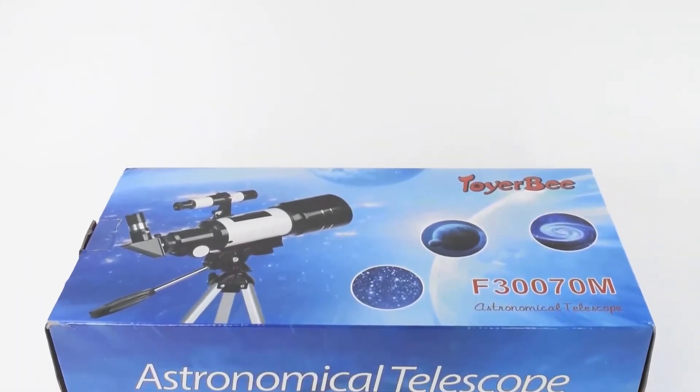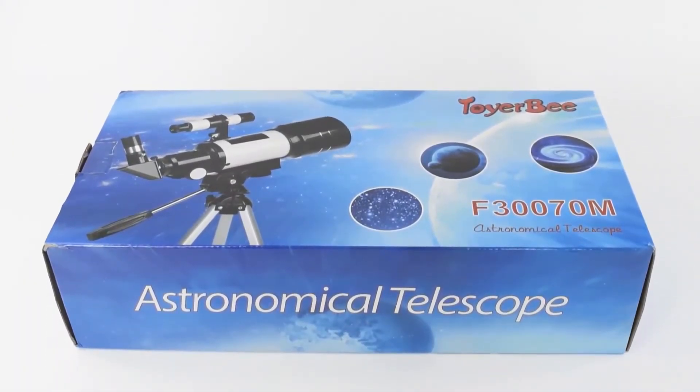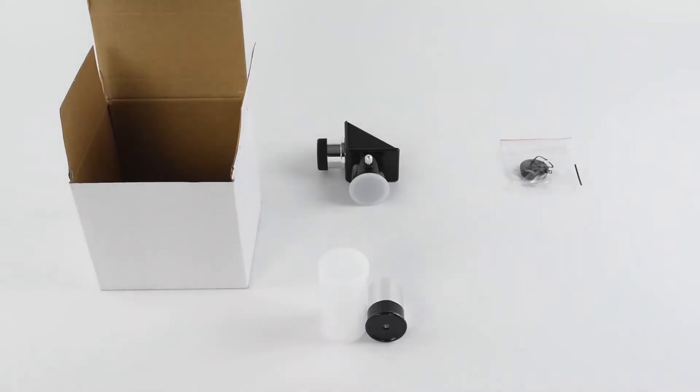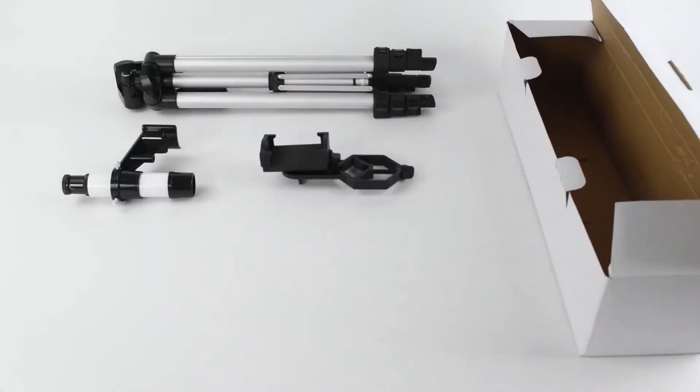Toyer B Refractor Telescope Installation Guidelines. Carefully remove all parts from the cardboard box and lay them on a table or floor in order to make sure all the items listed in the parts list are accounted for.